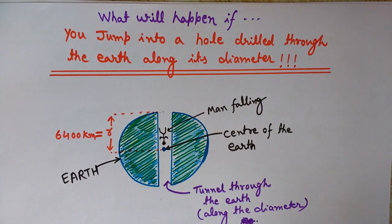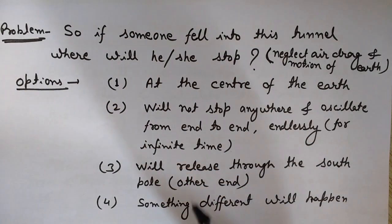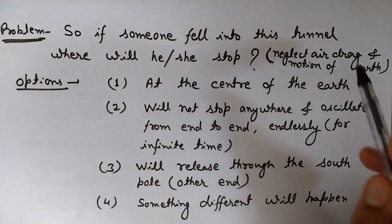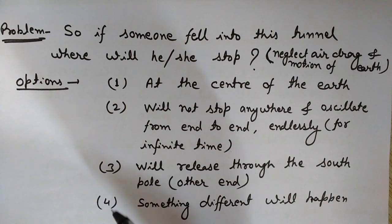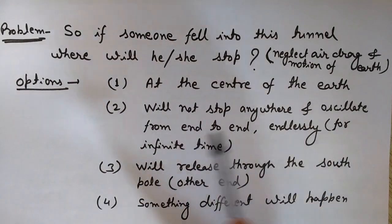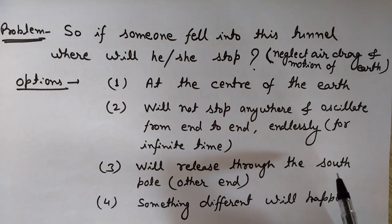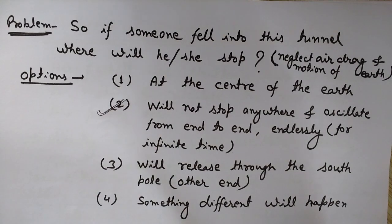So this is our problem: if someone fell into this tunnel accidentally or intentionally, where will he stop? One important thing — we are neglecting air drag, assuming no air is present in the tunnel. There are four options: he stops at the center, oscillates from end to end infinitely, is released through the south pole, or something different happens. The answer is the second option — he will not stop anywhere and will endlessly oscillate end to end.